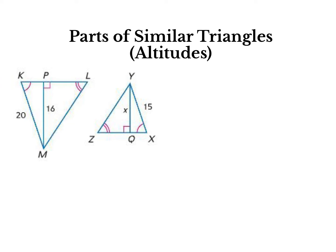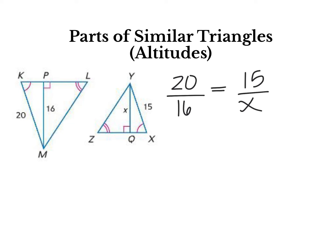Here we have altitudes, or the height. The height of the triangle will always be perpendicular to the base — it will always go straight down to the base and always form a 90-degree angle. So here, when I'm creating my proportion, I'm looking at the corresponding sides. 20 is to 16 as 15 is to x. The thing to consider here is that you're going from the diagonal outside leg to the height. So 20 over height equals 15 over height. And then we just cross multiply. We do the exact same thing we've been doing in all of these videos and all of these topics in this unit.